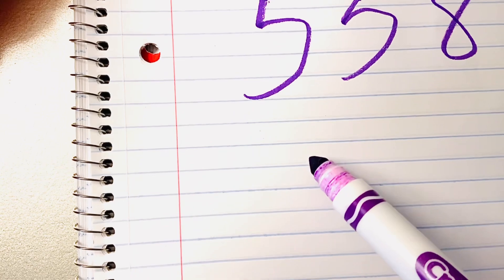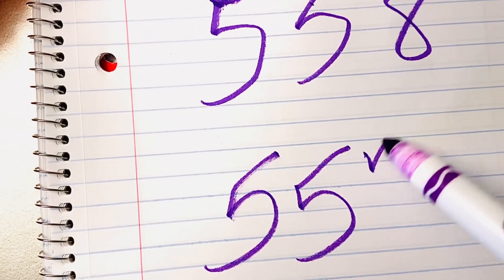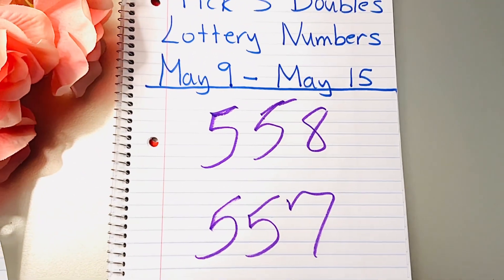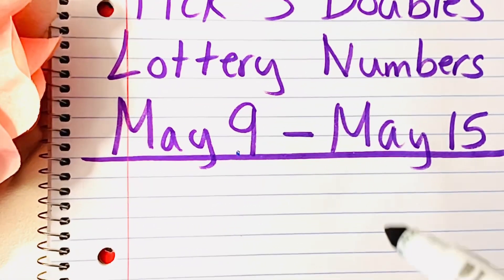So if you're playing 558, I would play 557 just to cover in case it does fall with the fives, but just one off.